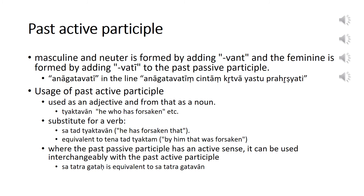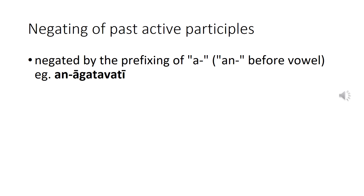Note that there is no equivalent in English to the past active participle. Common usages of the past active participle are given here. Like the past passive participle, the past active participle can also be negated by prefixing 'a' or 'an' before a vowel, as we saw in the word 'anagatavati'.